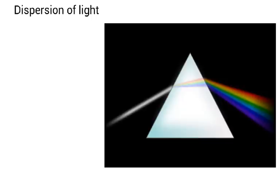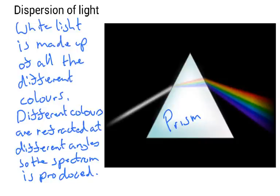Finally, I want to talk about the dispersion of light. This object is called a prism and when white light passes through it, you get the full spectrum of colour coming off. The reason you get a full spectrum is because the refractive index for different colours is actually different, so the angle of refraction as the light passes through is slightly different and the light of different colours comes off at different angles. White light is made up of all different colours, and different colours are refracted at different angles — that's why the spectrum is produced.